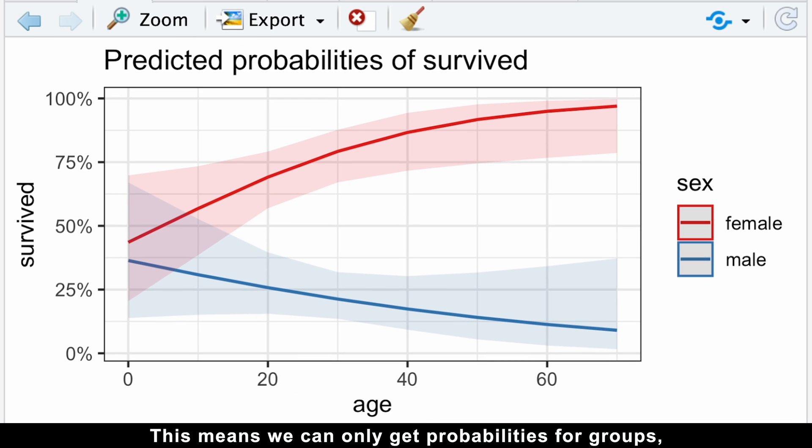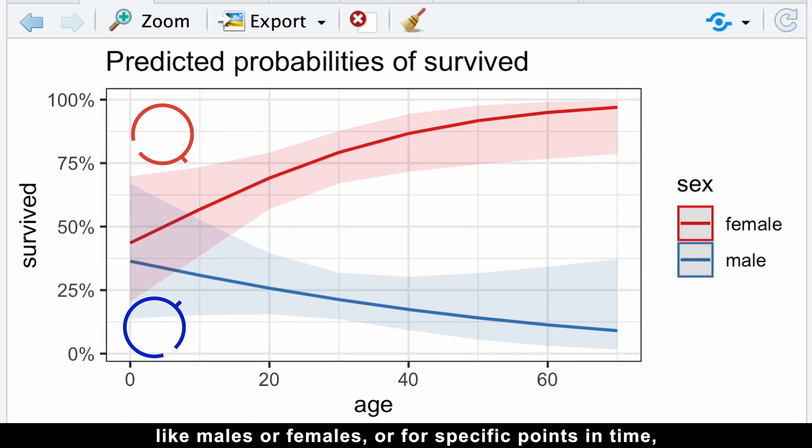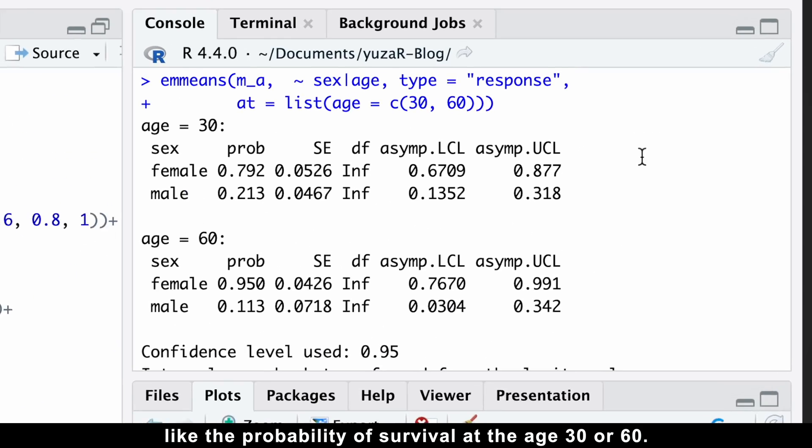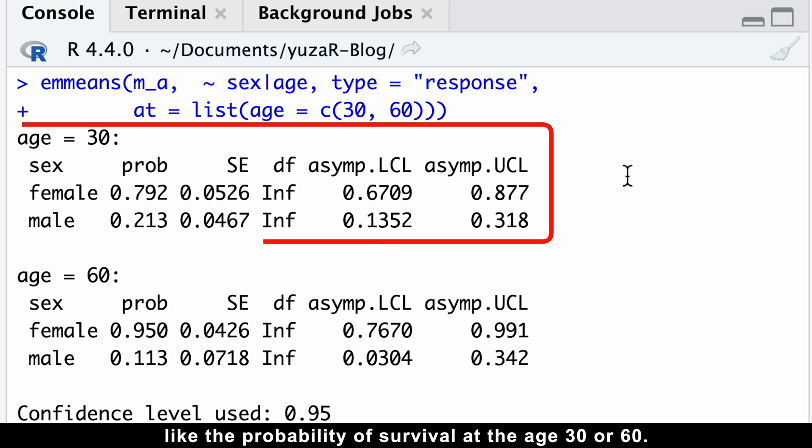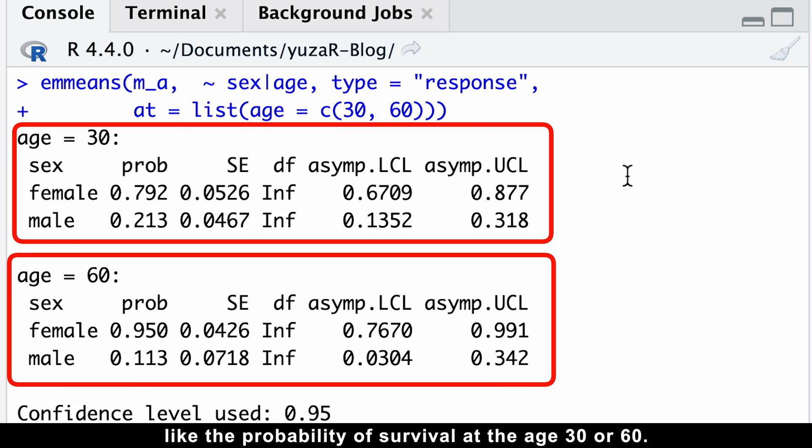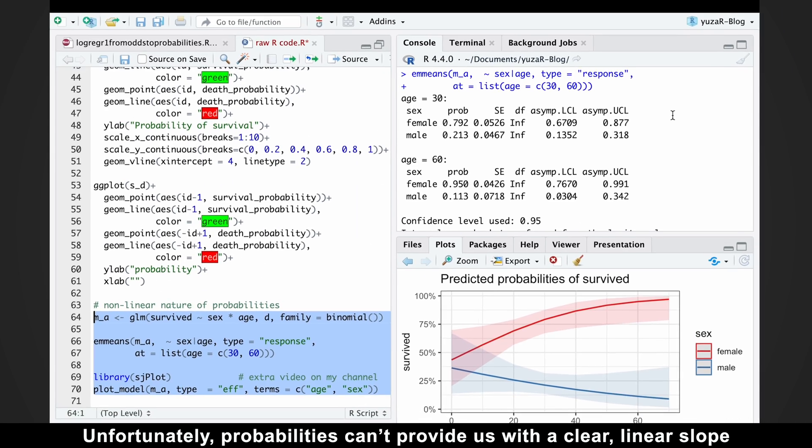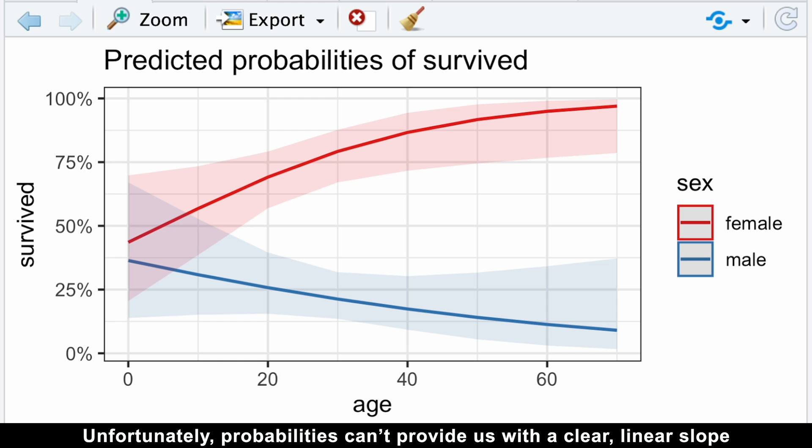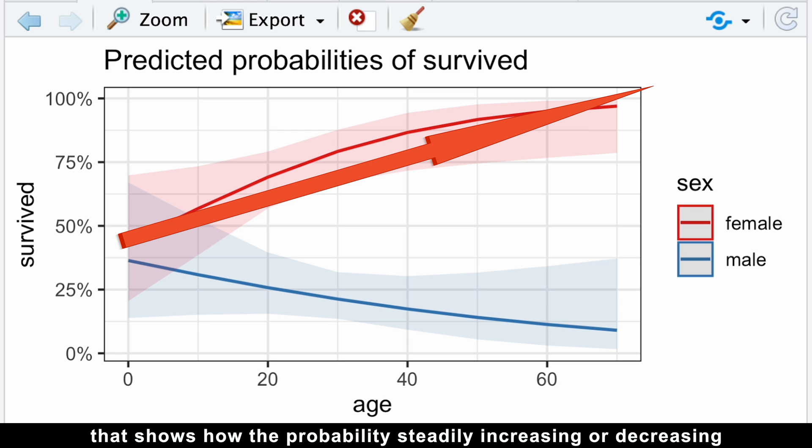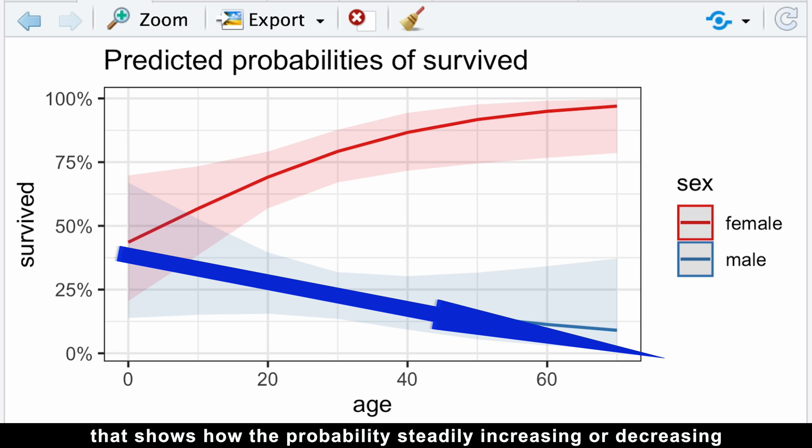This means we can only get probabilities for groups like males or females, or for specific points in time, like the probability of survival at age 30 or 60. Unfortunately, the probabilities cannot provide us with a clear linear slope that shows the probability steadily increasing or decreasing with each unit change in the predictor.